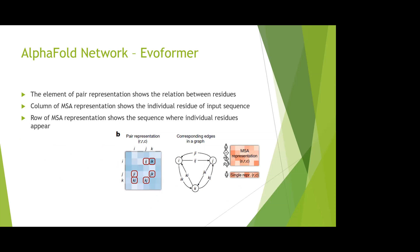In this figure it shows the detailed pair representation and the corresponding edges. The elements of the pair representation show the relationship between different residues. For the MSA representation, each column shows the individual residue of the input sequence, and the rows of the MSA representation show the sequences where the individual residues appear.